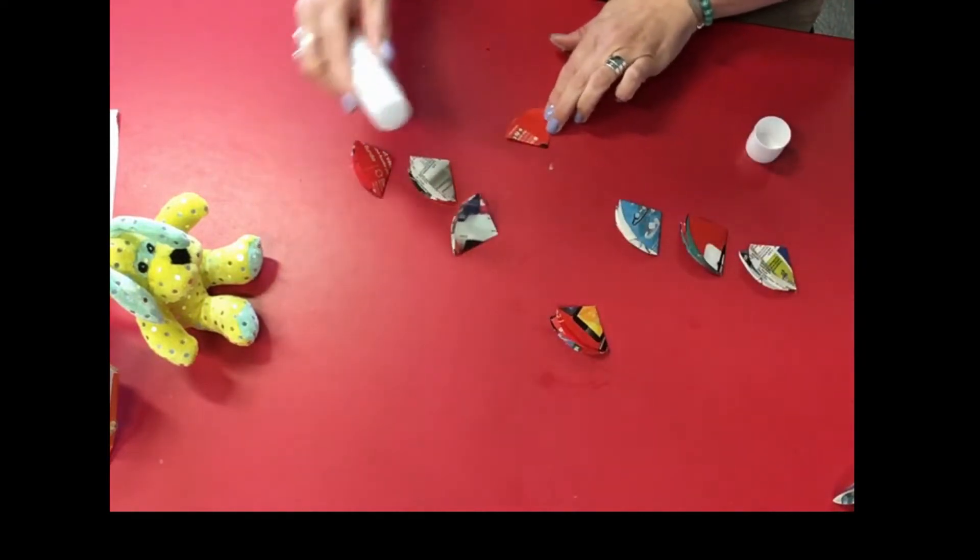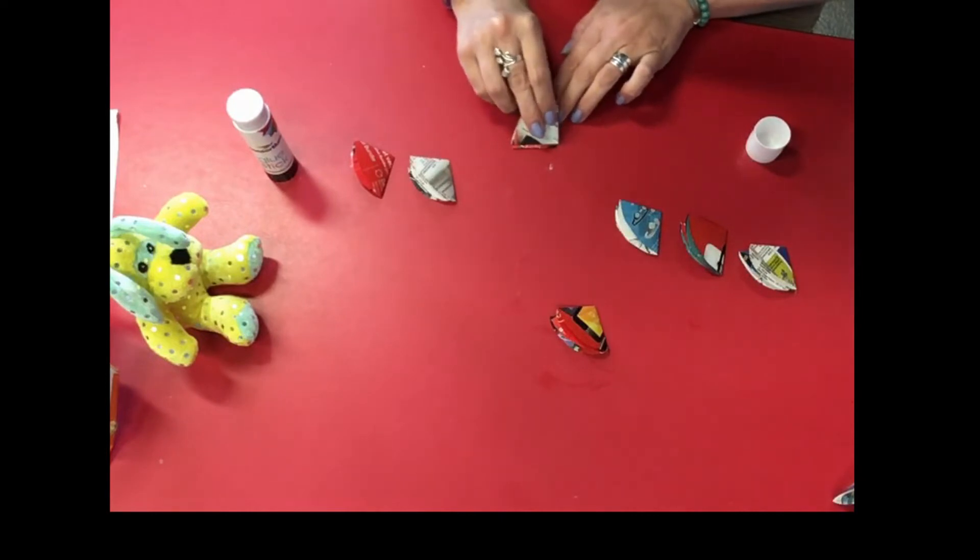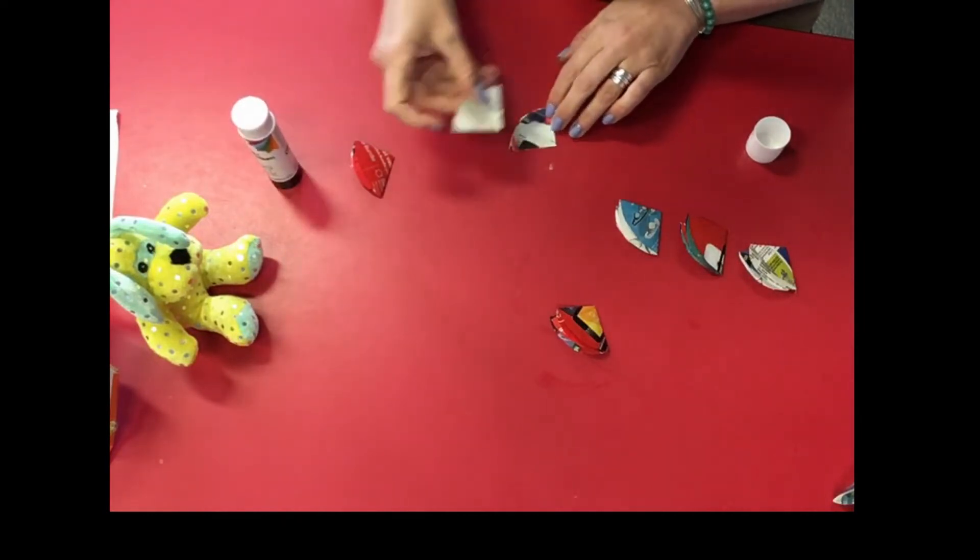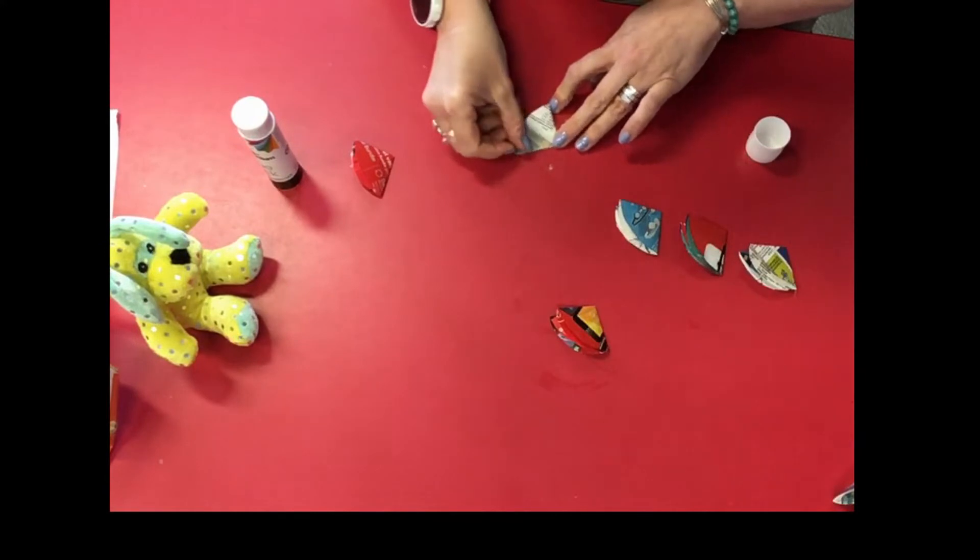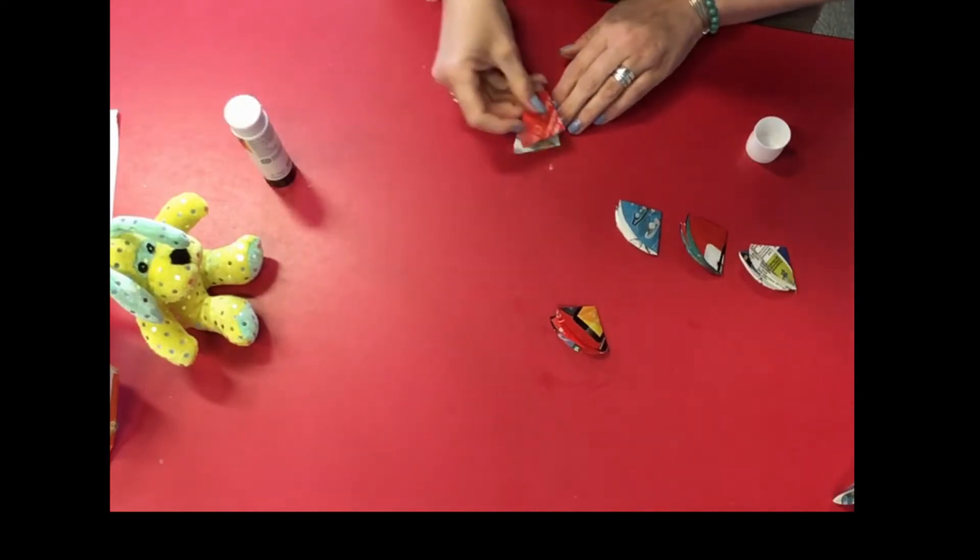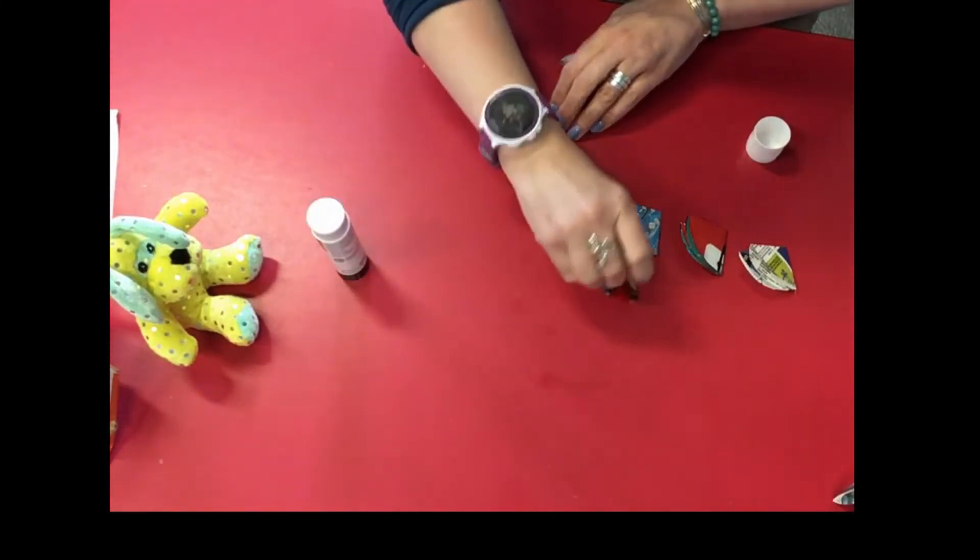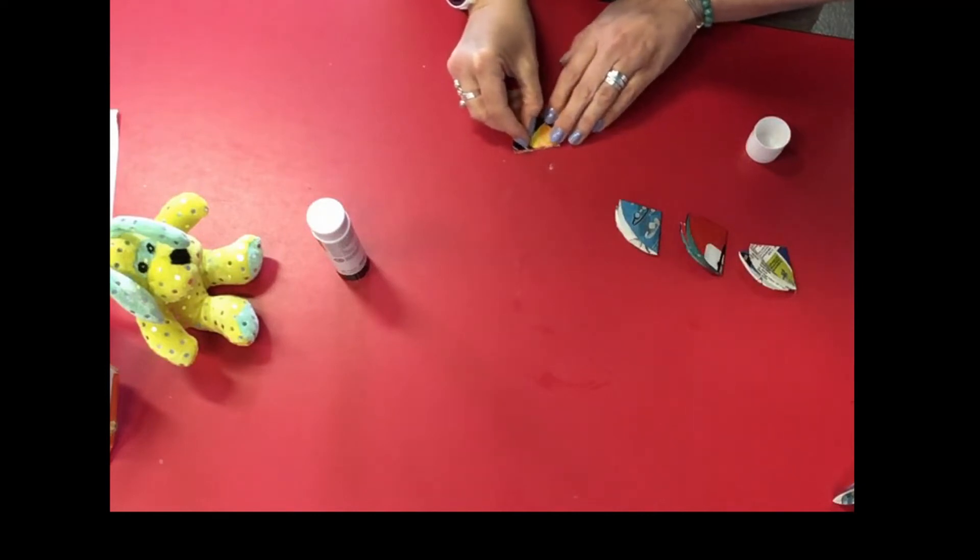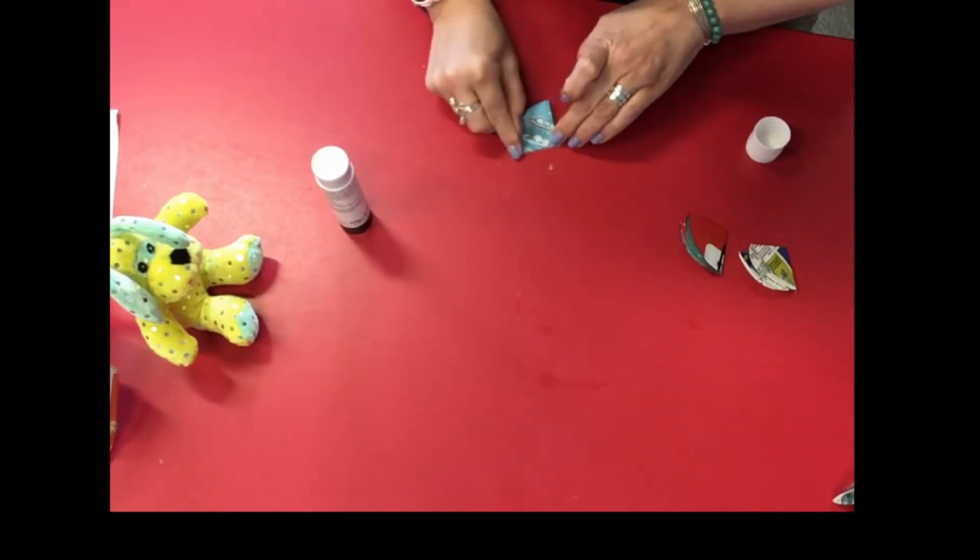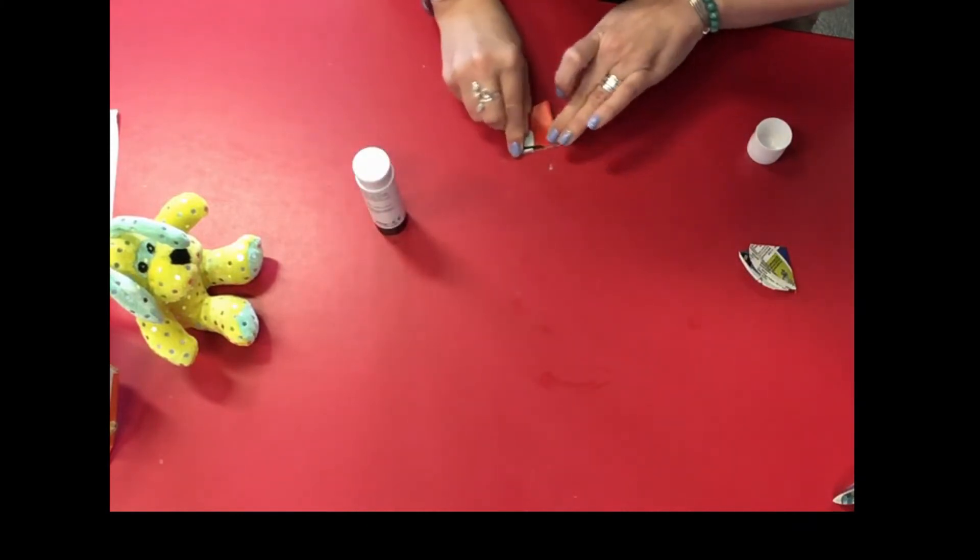So we're going to take the first one and put some glue down the side. And then the next one is just going to go straight on top. And press it down. Glue on top. Put the next one on. And then press it down. And we keep going until we've used all of them. All right.